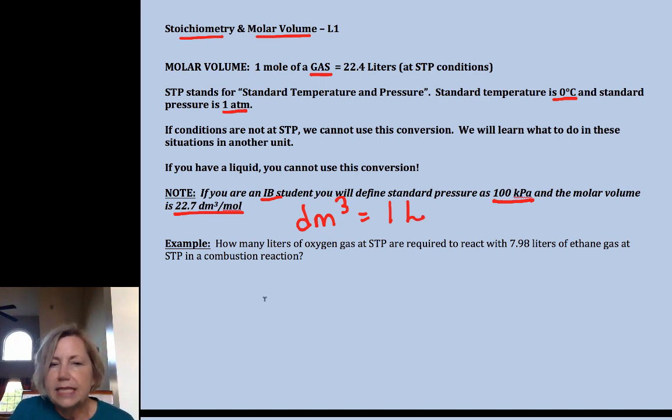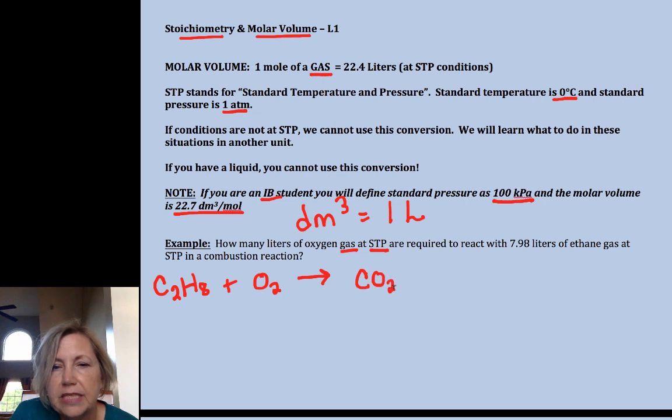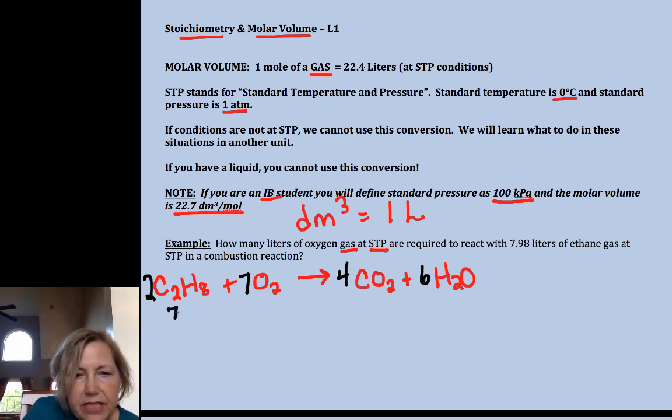It says how many liters of gas at STP, so we have a gas and we are at STP, are needed to react with ethane. Ethane is two carbons and eight hydrogens, and we're adding oxygen to that. We're going to assume complete combustion unless otherwise indicated. Complete combustion is going to make CO2 and H2O, and then we need to balance that, so we would need a two here and a seven and a four and a six.